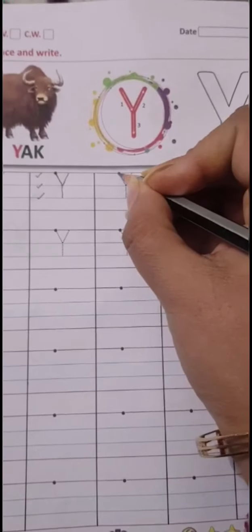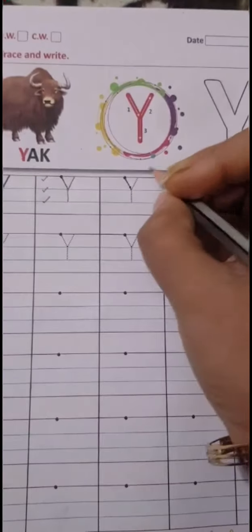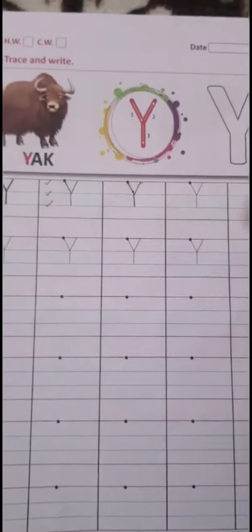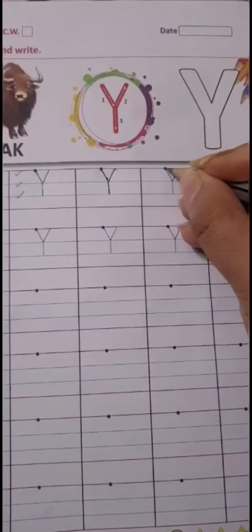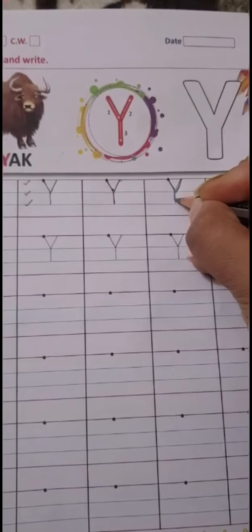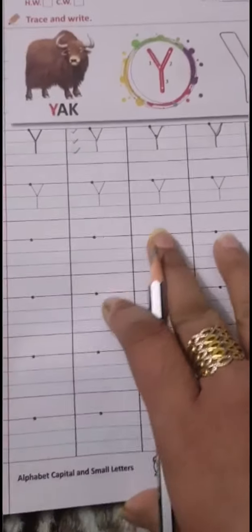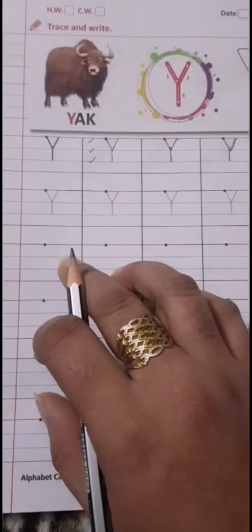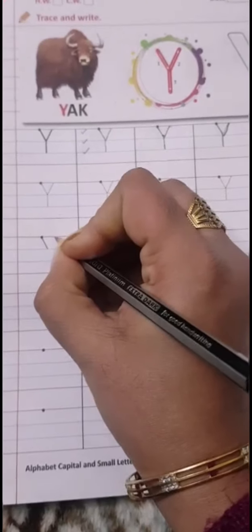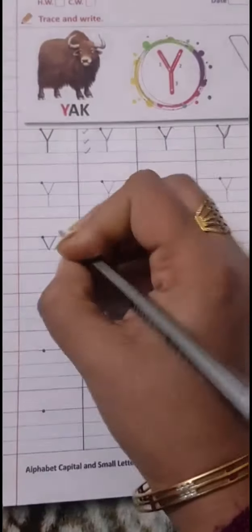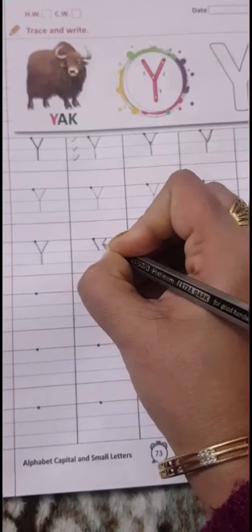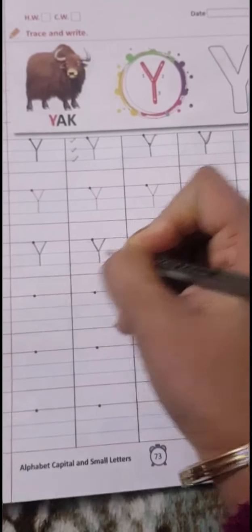We will use these three lines to make letter Y. Again: slanting line, one more slanting line, and then a standing line. Here I am going to draw without dots: slanting line, again slanting line, then one more standing line. Slanting line, again slanting line, then again a standing line.